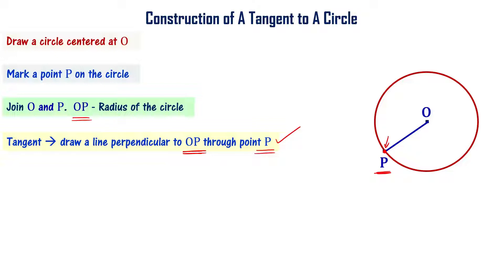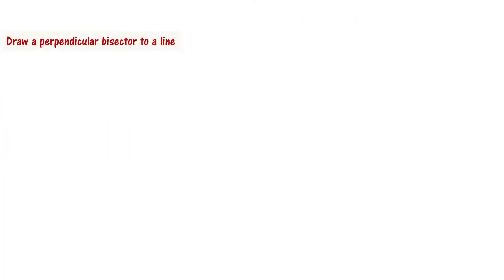If we have to draw a perpendicular line, we could use a protractor. But what we are going to do now is use a compass and scale. We will draw a line and construct a perpendicular bisector to that line. This line is the perpendicular bisector.